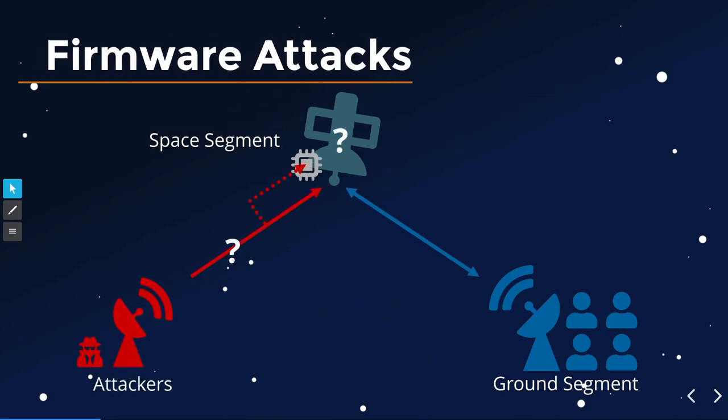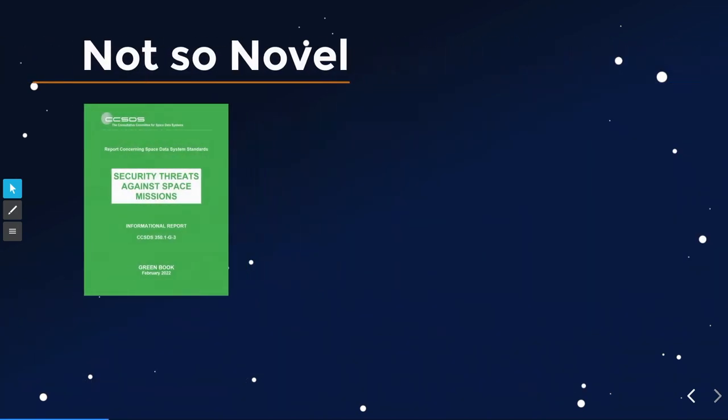Firmware attacks on satellites are much more about an attacker having their own ground station — even a small one — and talking directly to a satellite, then exploiting one or more vulnerabilities on the satellite, or just missing security measures, to perform usual software attacks on the satellite itself. This concept is not really novel — reports have stated you should look at software security of satellites probably since the 90s, but it was never really addressed publicly.